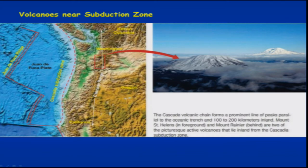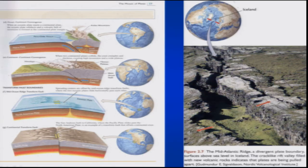Moving ahead, subduction zones will have volcanic eruptions on the overriding plate. This is an example from Cascadia showing a mountain chain comprising several volcanic cones. This picture shows Mount Saint Helens in the foreground and Mount Rainier behind. Many active volcanoes are encountered along plate boundaries where an oceanic plate is subducting below a continental plate. The best example of a spreading center visible on the surface is Iceland, where the spreading center passes through the mid-oceanic ridges — one of the best examples of a divergent plate boundary on the earth's surface.